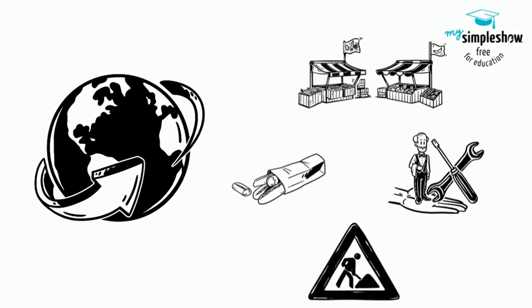In the diagram, firms produce goods and services, which they sell to households in return for revenues. Households sell their labor as workers to firms in return for wages, salaries, and benefits.